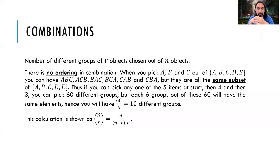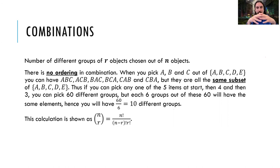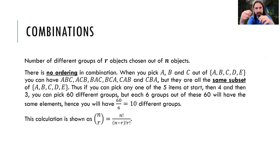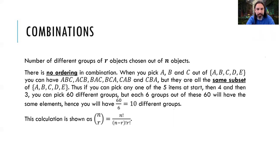Now we have combinations — the number of different groups of R objects chosen out of N objects. If you have five objects labeled A, B, C, D, and E and you are trying to pick some of them, the order in which you pick doesn't matter. If you pick A then B then C, or B then A then C, you already have the same result. This is the key idea behind combinations.